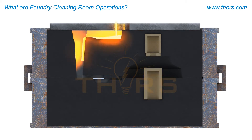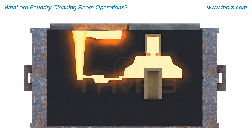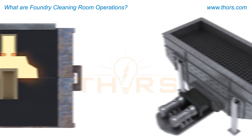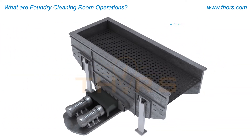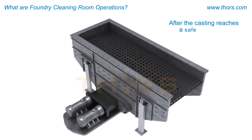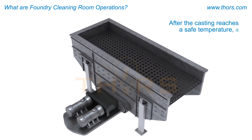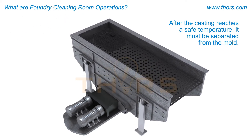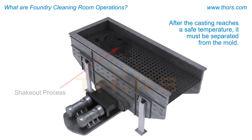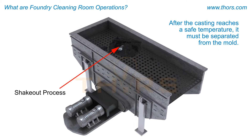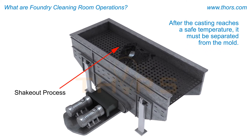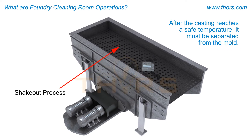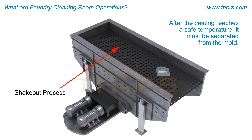The next stage is pouring the molten metal into the prepared molds. After the casting reaches a safe temperature, it must be separated from the mold. Separation is often done using a shakeout process. If cores are used, they are removed at this stage as well.